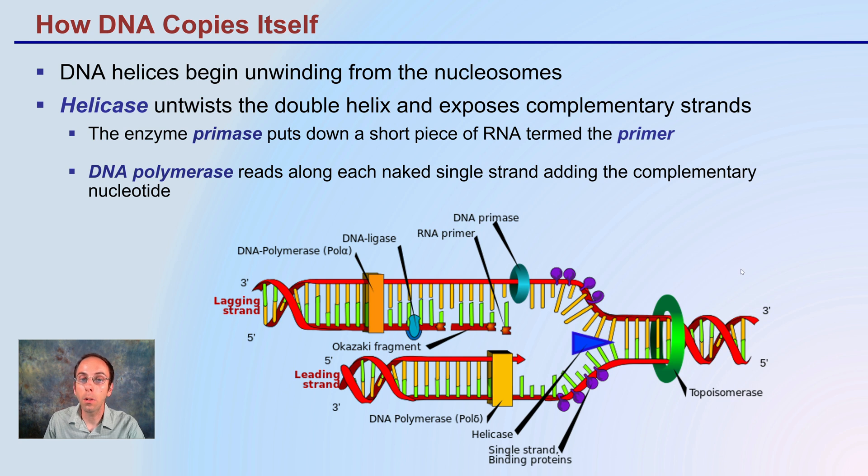DNA polymerase reads along each single strand by adding the complementary nucleotides. Remember adenine binds with thymine, A binds with T and G binds with C, guanine with cytosine, a purine and a pyrimidine binding together.